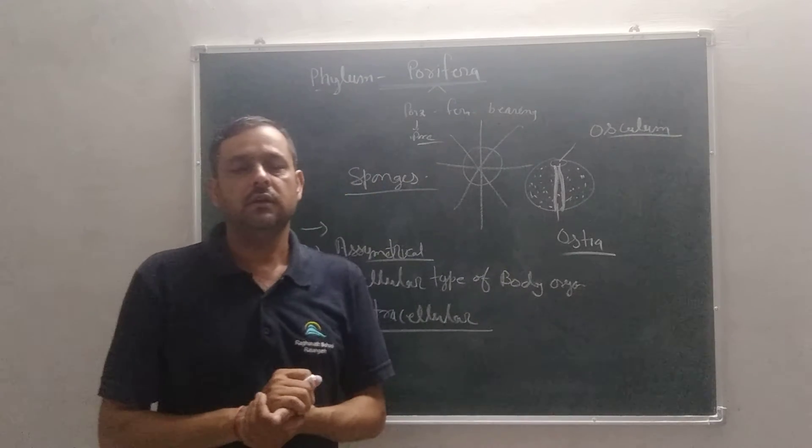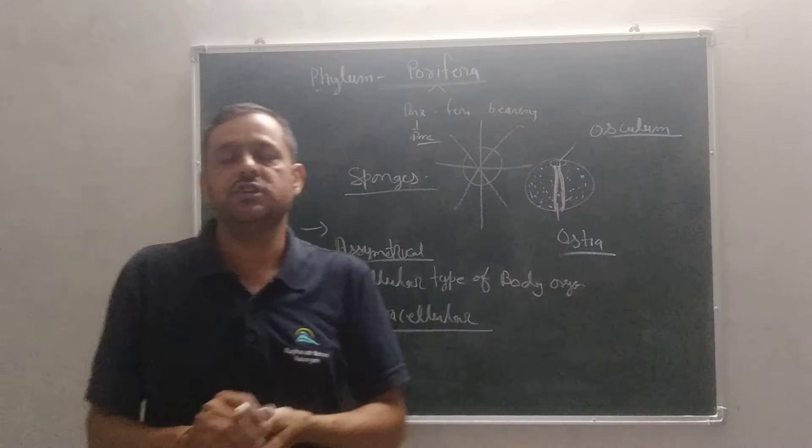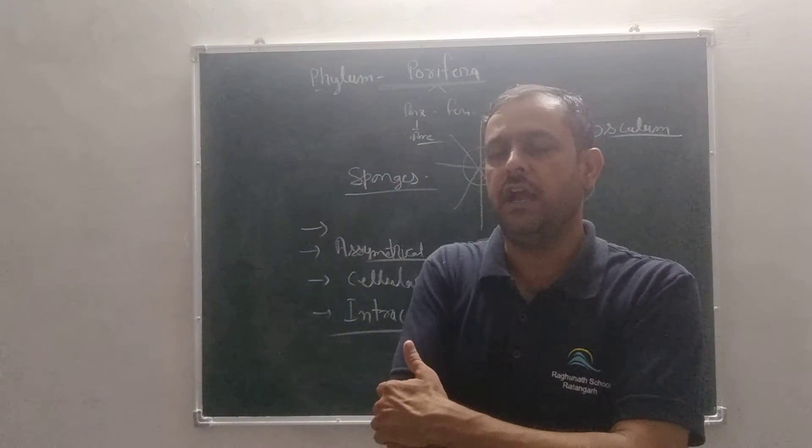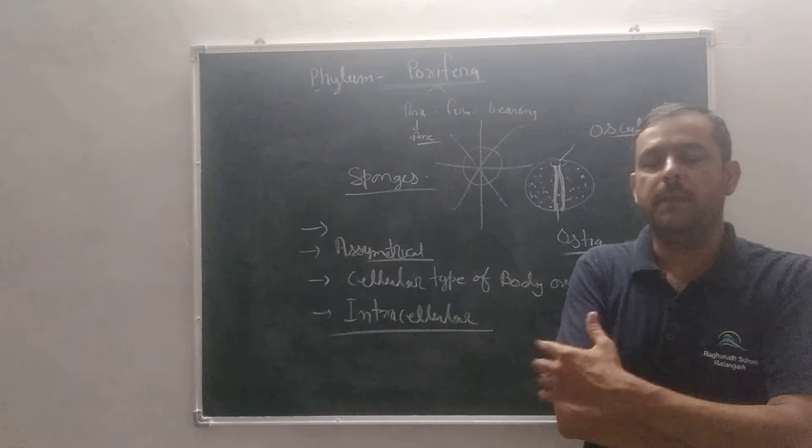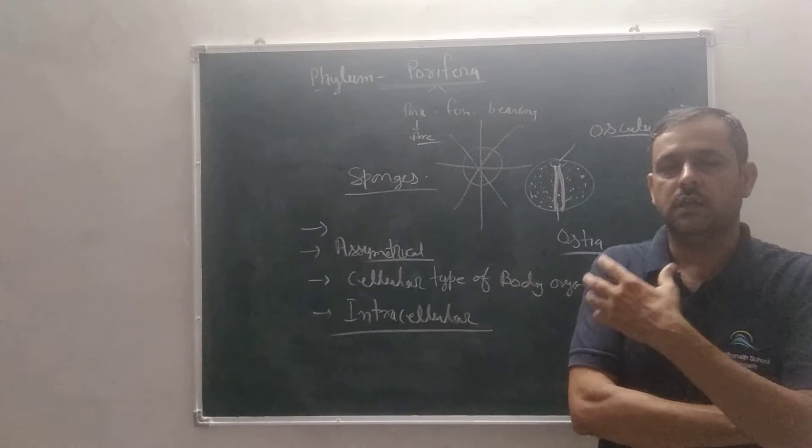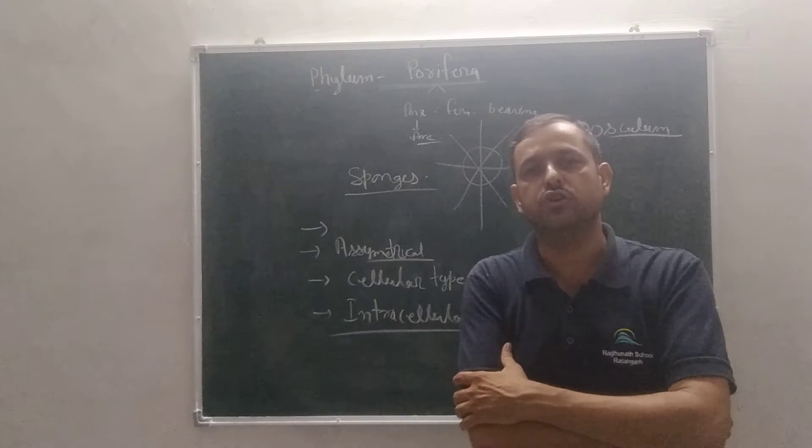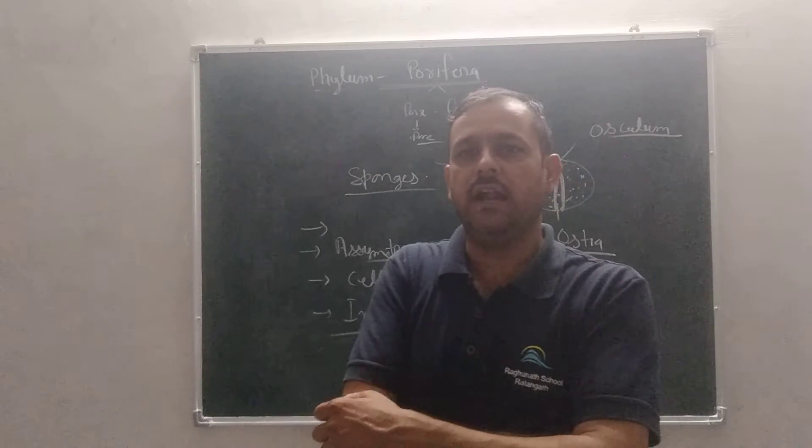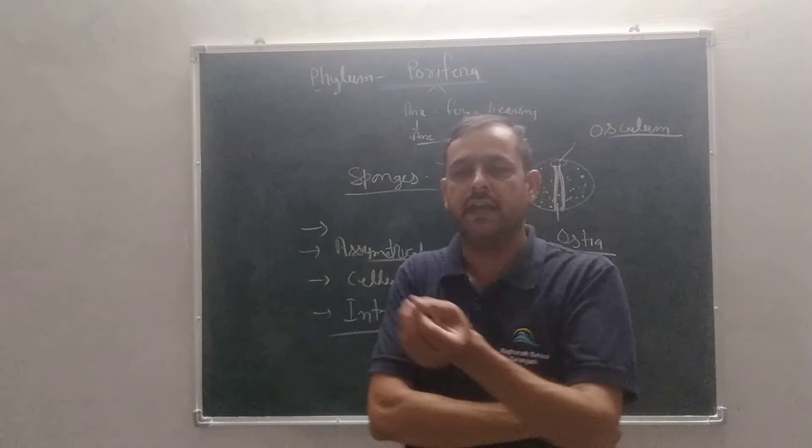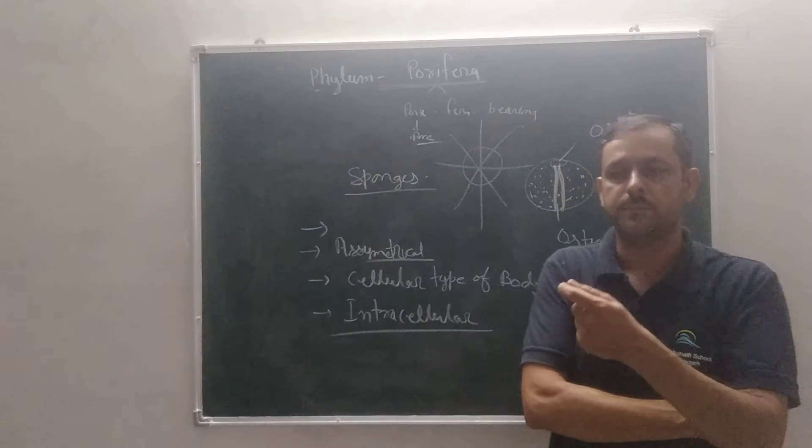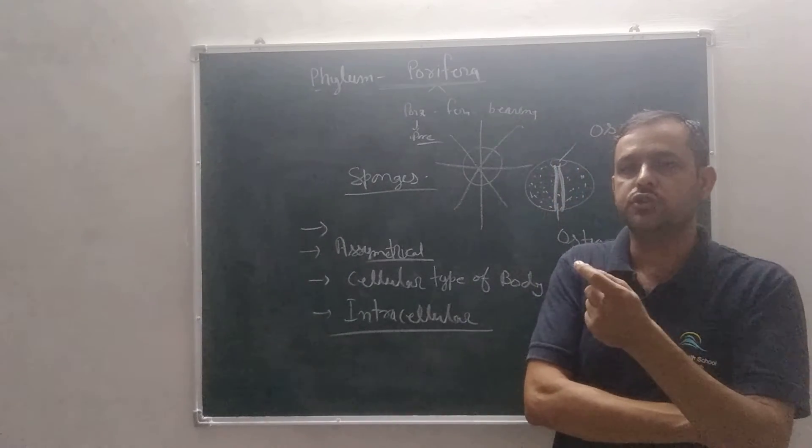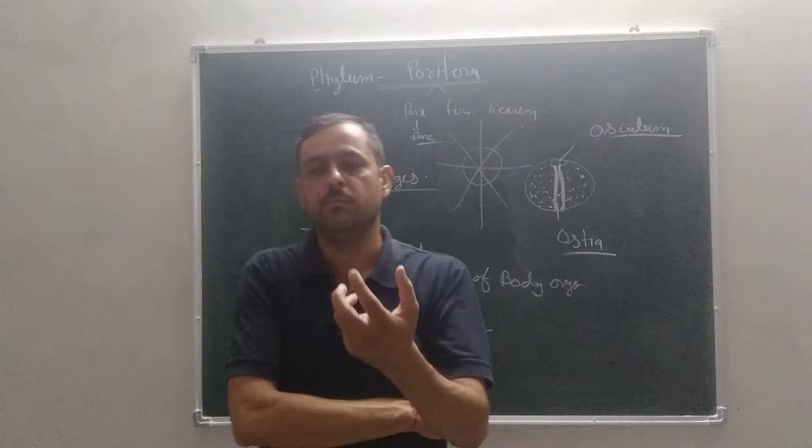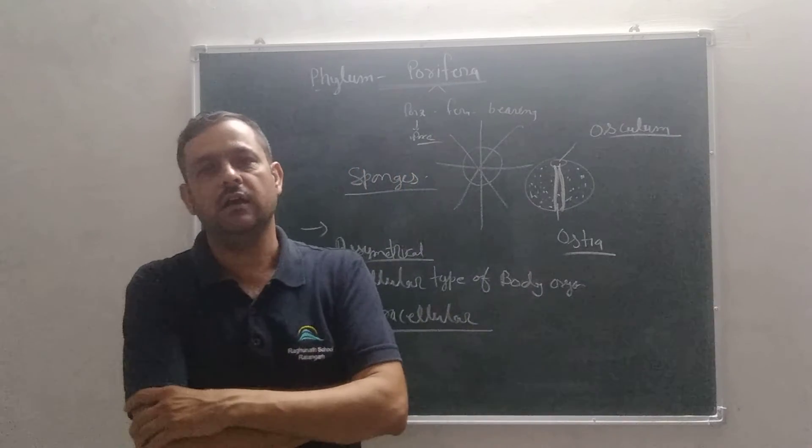The calcium carbonate or siliceous fibers make its endoskeleton which gives a base to animal. There are two types of skeleton: endoskeleton and exoskeleton. For example, our bones are the example of endoskeleton and our nails are the example of exoskeleton. These animals have an endoskeleton of spicules or calcium carbonate which give base to the animals.